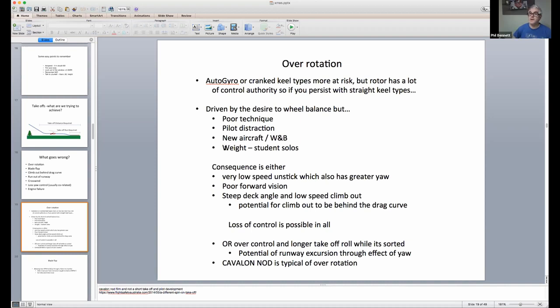So, what's the consequence of over-rotation? Well, basically, you unstick at a very low airspeed. Why do you unstick at a lower airspeed? Well, because you've got a lot bigger angle of attack, and so, therefore, the aircraft tries to get airborne at a lower speed, i.e. more angle of attack. You know, if you think of the lift equation, angle of attack is, well, it's basically angle of attack and speed.